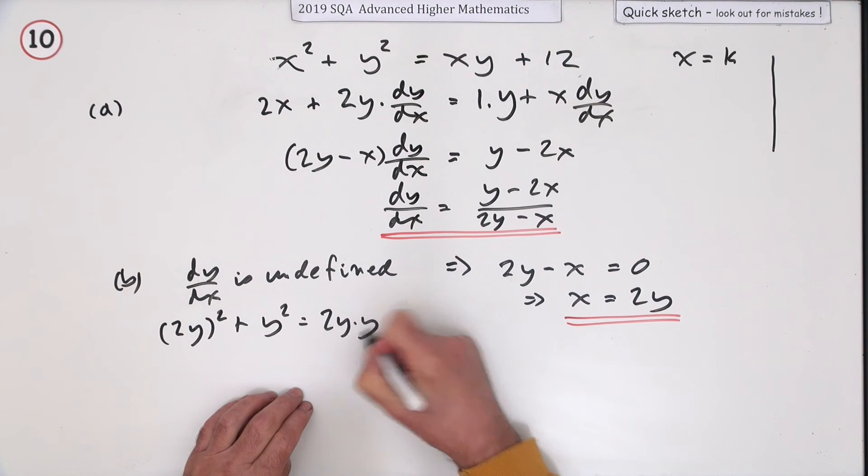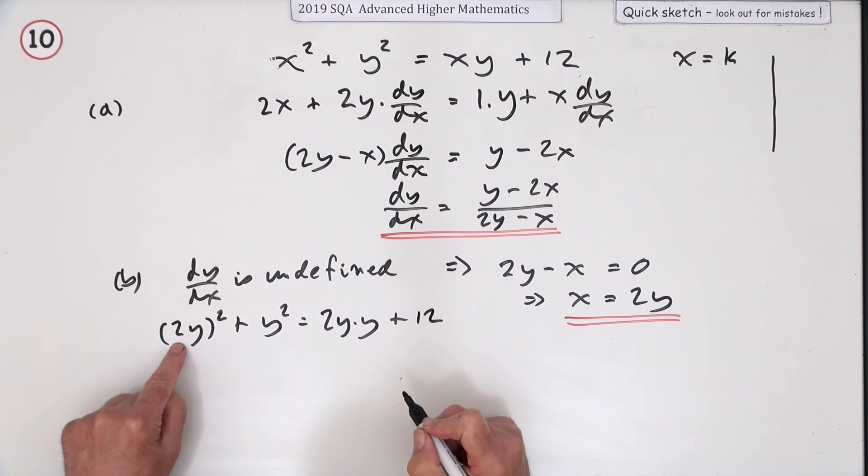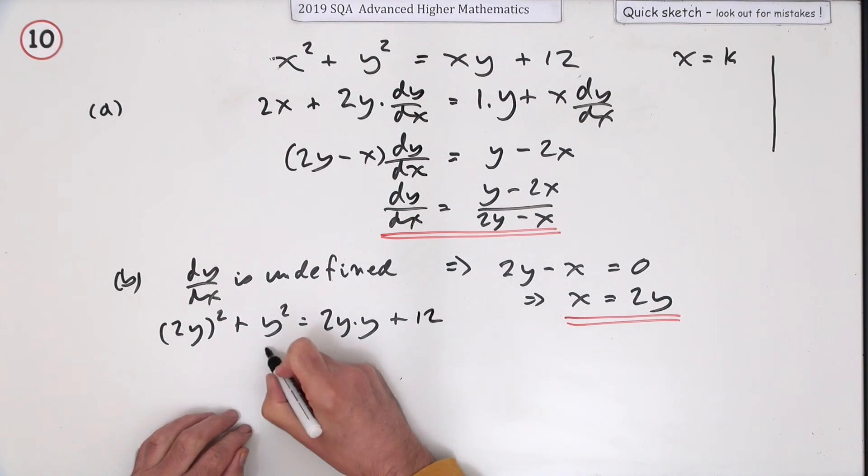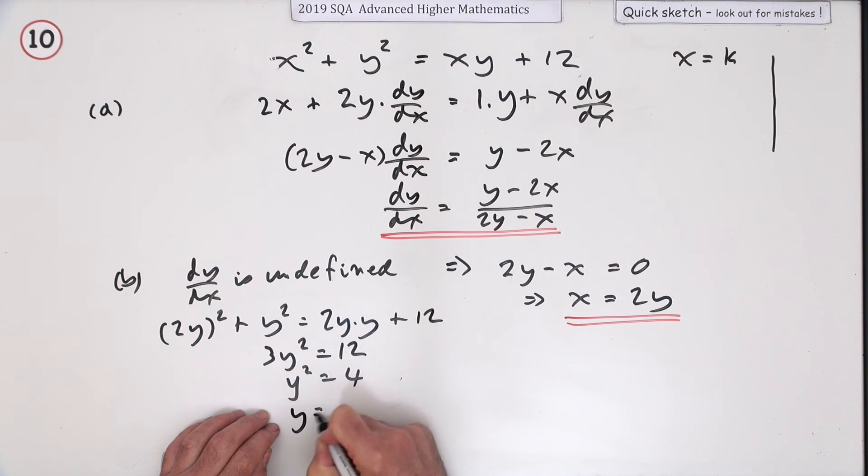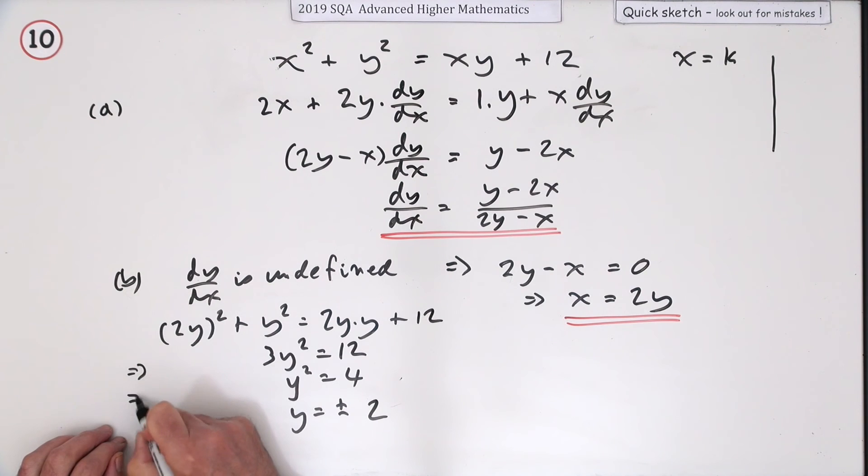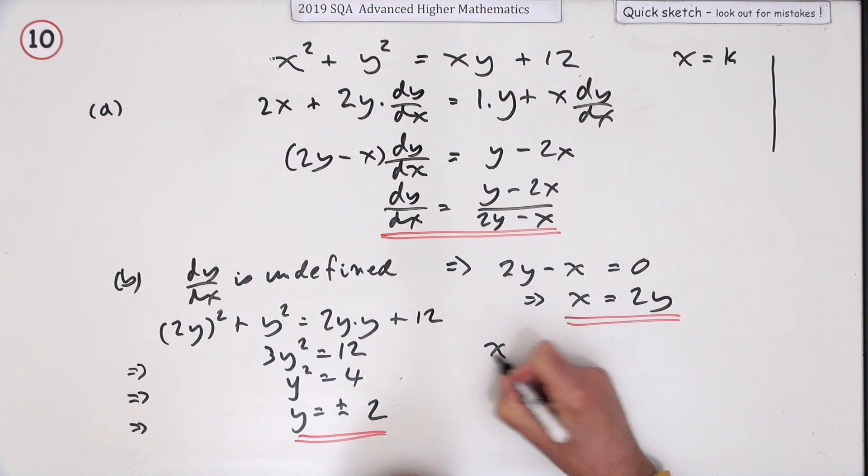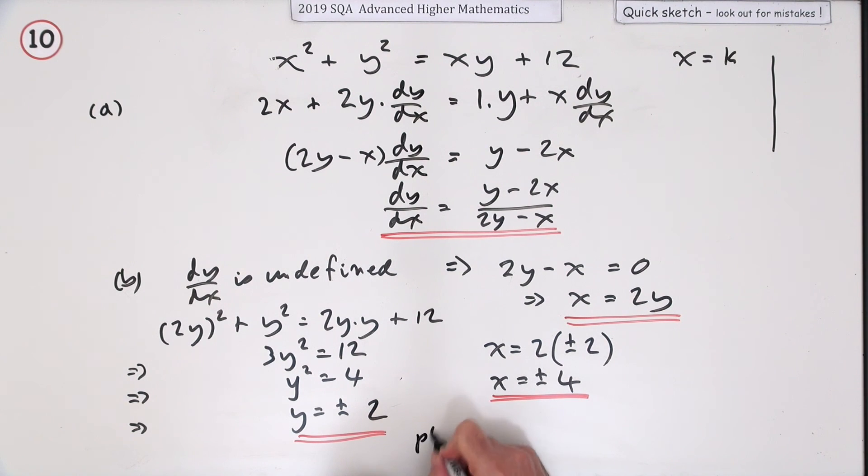Then x times y is 2y times y, plus 12. That's just a bunch of y squareds: 4y squared plus 1y squared is 5, take away these two, so 3y squared is 12, so y squared is 4, so y is plus or minus 2. That's how you're getting your two points. From this, x equals twice y, so it's twice plus or minus 2, so x is plus or minus 4. Which means that the points are: take the negative one first, (-4, -2) and (4, 2).